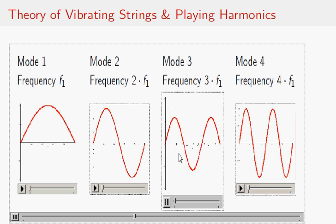While here, for mode 3, there are nodes at a third the string length and two-thirds the string length.